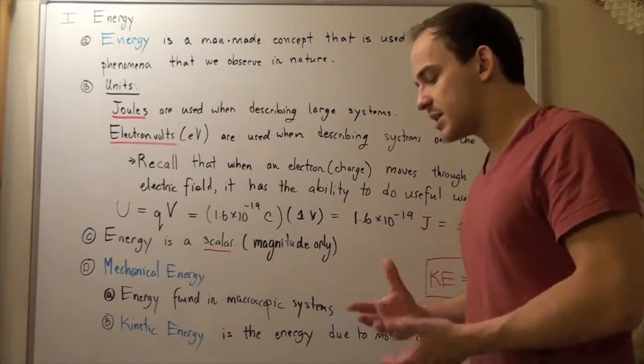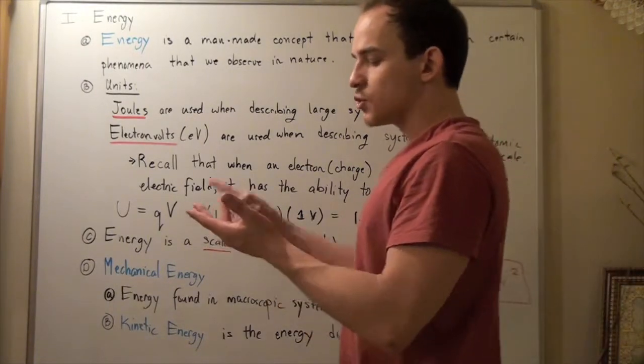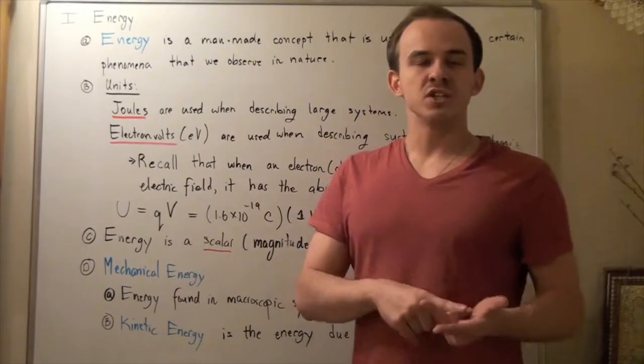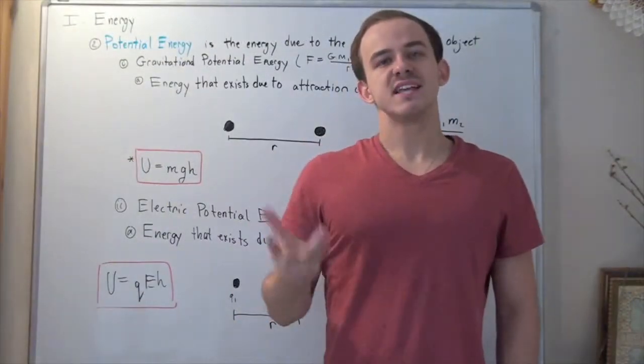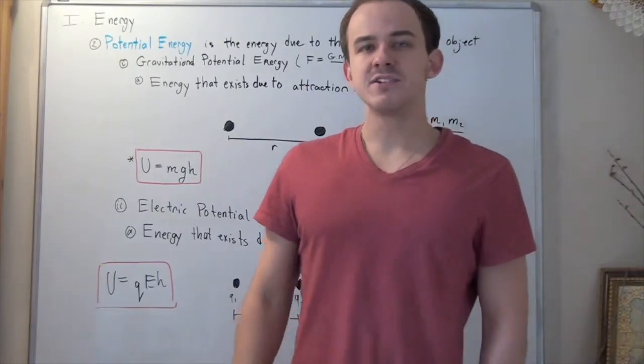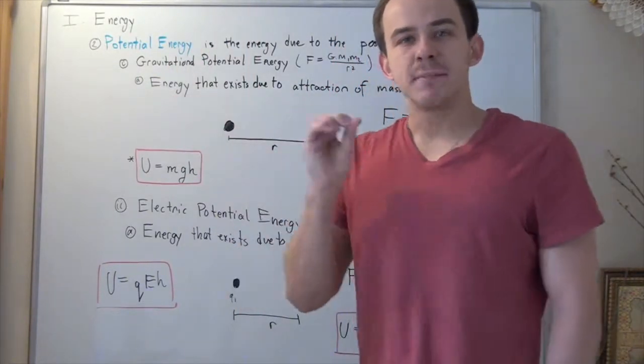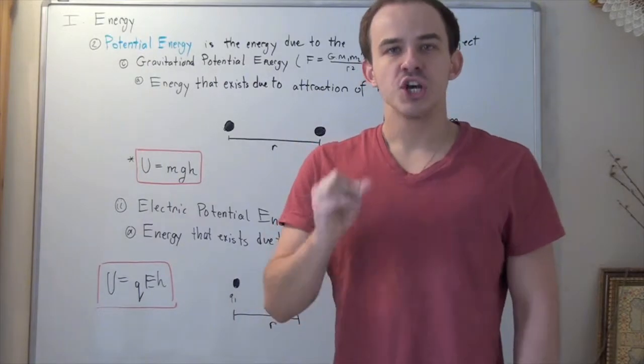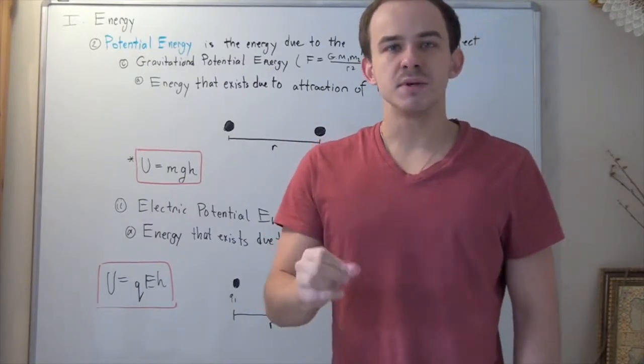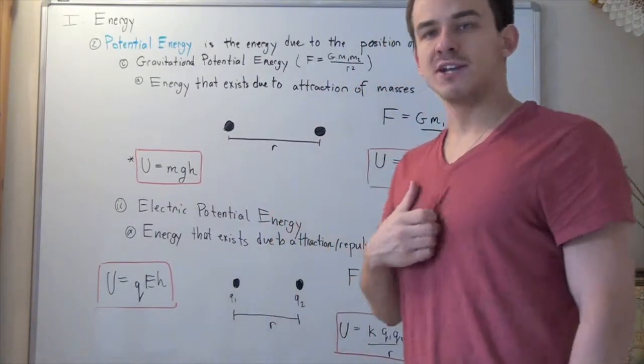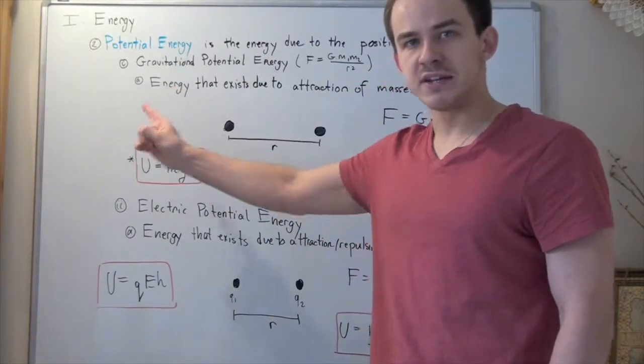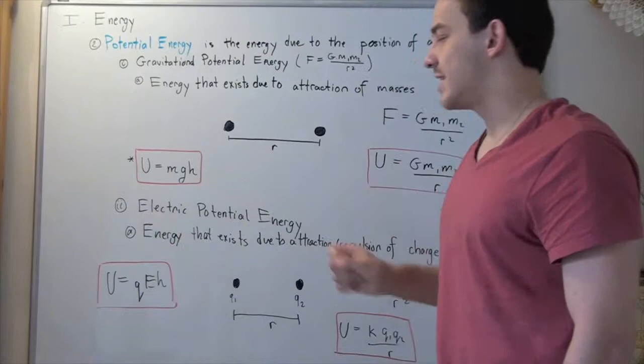Now, there are different types of kinetic energies. There is translational, rotational, and vibrational kinetic energy. So, now, let's examine a second type of mechanical energy known as potential energy. Now, potential energy is the energy due to the position or placement of object or objects. And there are two types of potential energies. There's gravitational potential energy and electric potential energy.